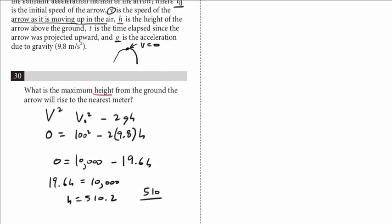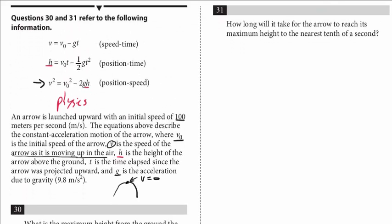One more question relating to this set of information. How long will it take the arrow to reach its maximum height to the nearest tenth of a second? So now, how long we're dealing with speed. So think about what we did in the previous problem. For speed, let's start with this one. Because remember, we're trying to solve for t. This one looks a lot more manageable too than this one with the t squared. So let's start with this one.